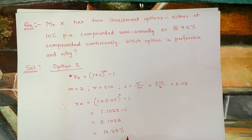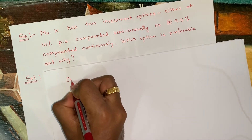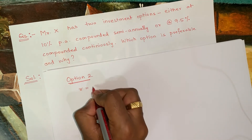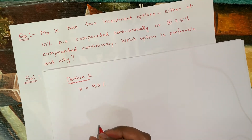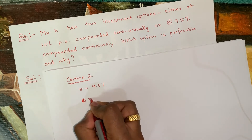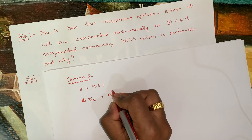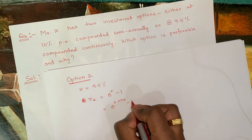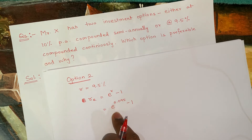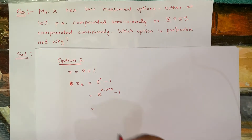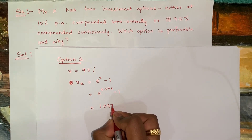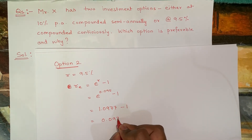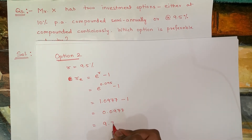For Option 2, the rate of interest is 9.5% compounded continuously. When interest is compounded continuously, the effective rate of return is e^r − 1 = e^0.095 − 1. Looking up the exponential table, e^0.095 = 1.0977, so the effective rate = 1.0977 − 1 = 0.0977, or 9.77%.